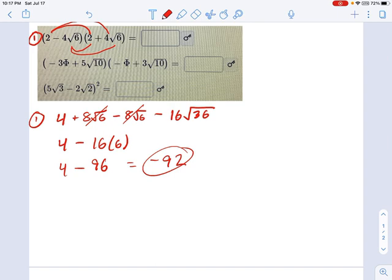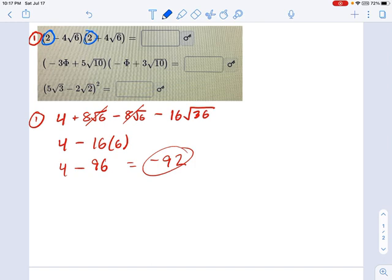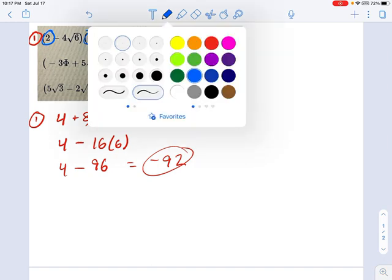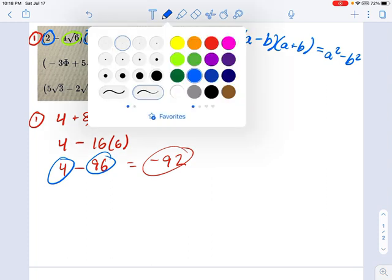That's how you foil in general. But I want to point out something. Did anyone notice that this is the difference of squares? Take a look. We've got A, which is 2, and B, which is 4 radical 6. You're doing A minus B times A plus B. So it's no surprise that we get A squared minus B squared. Be on the lookout for polynomial identities that we can use in this unit. They will come up.